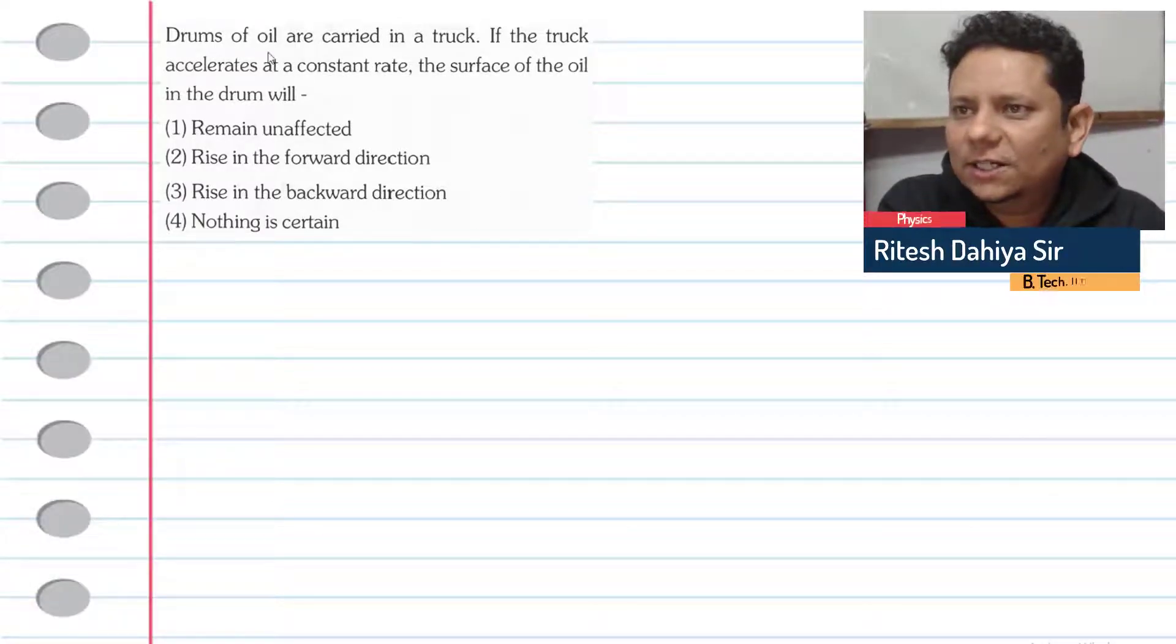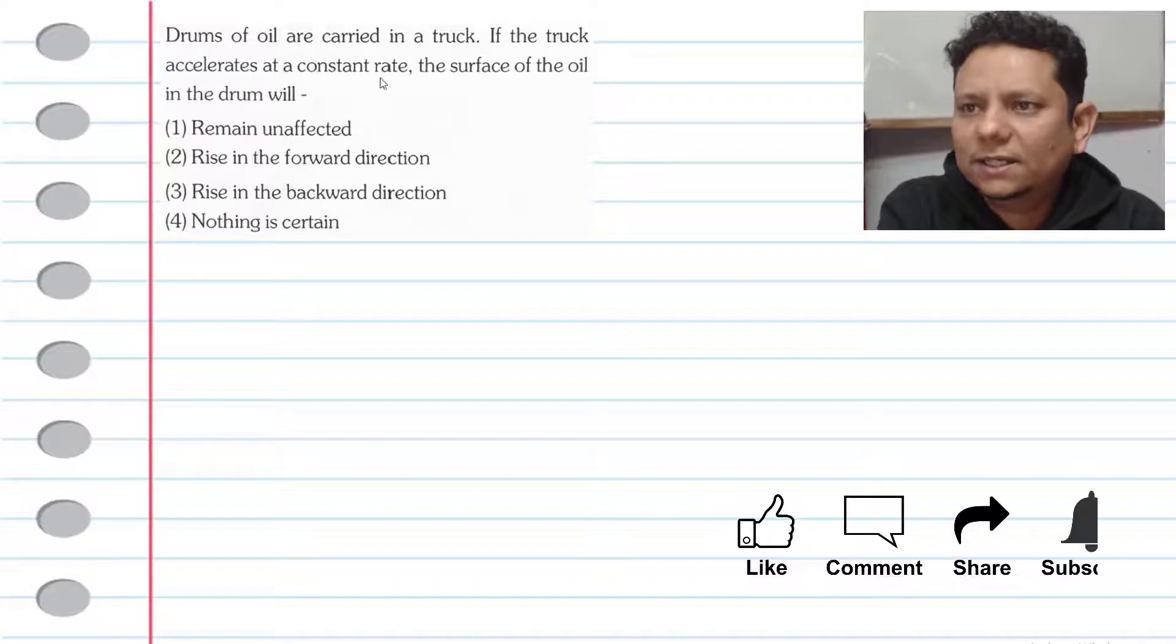Next question. The question says drums of oil are carried in a truck. If the truck accelerates at a constant rate - constant rate means that your acceleration is a constant value.